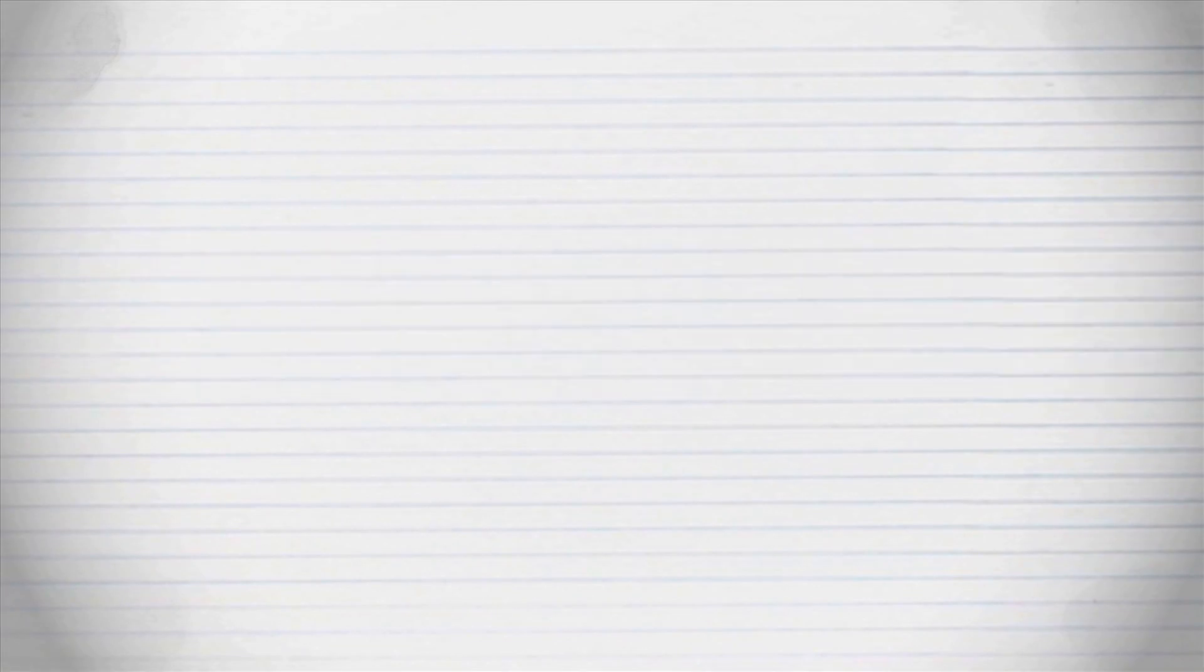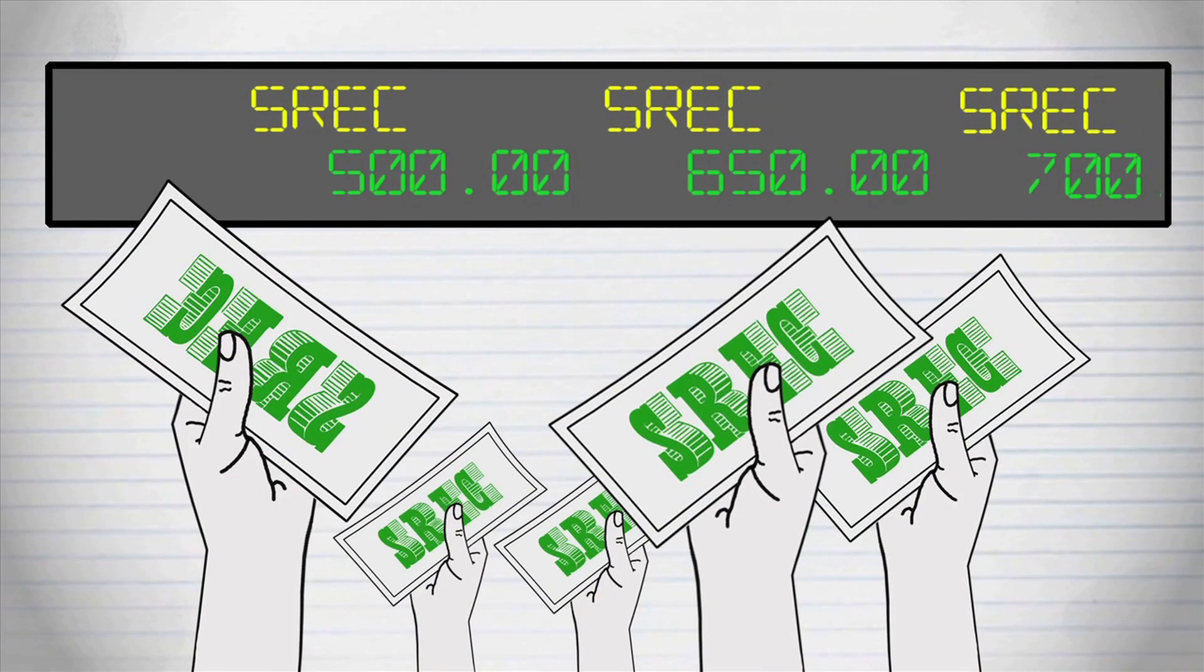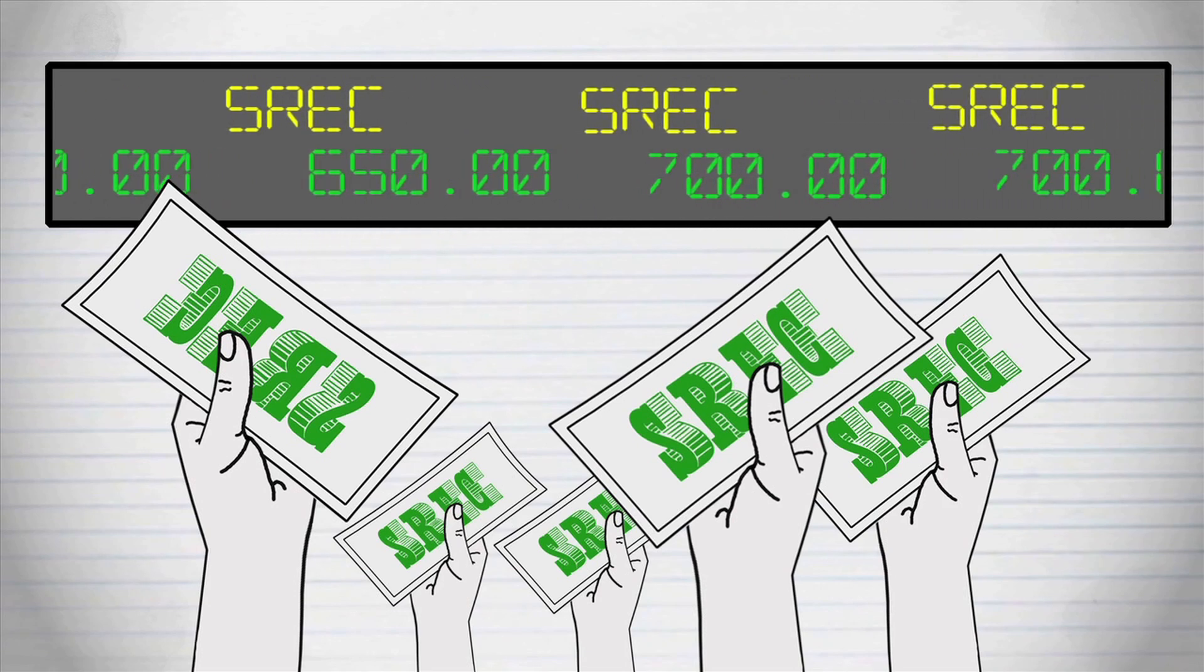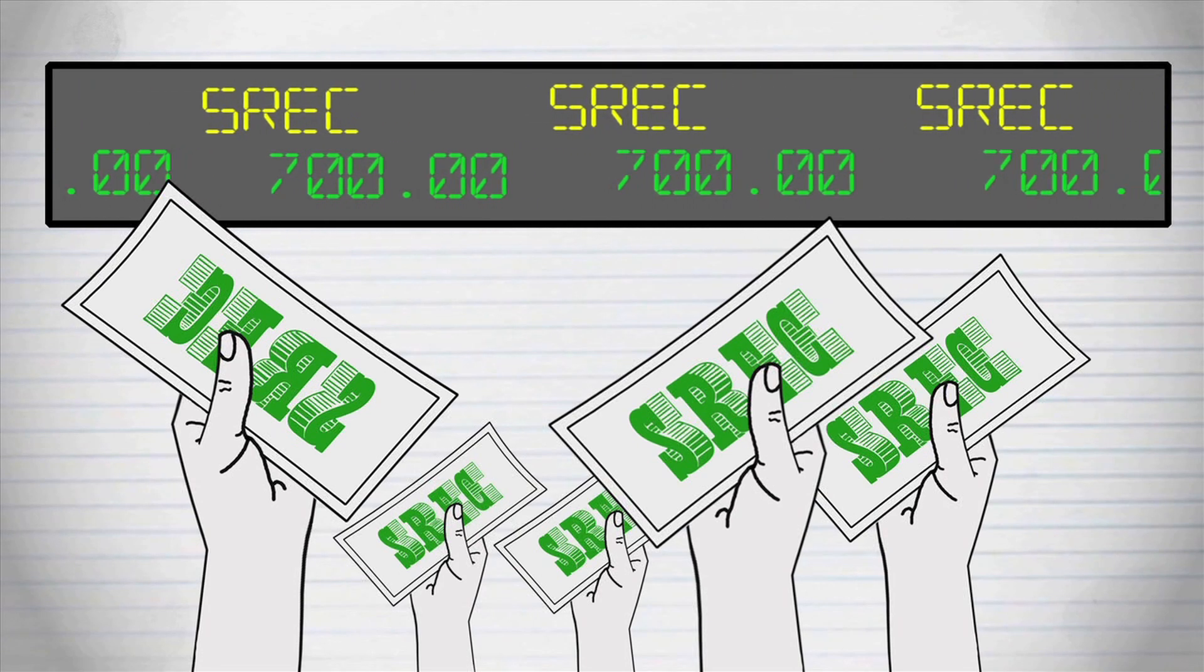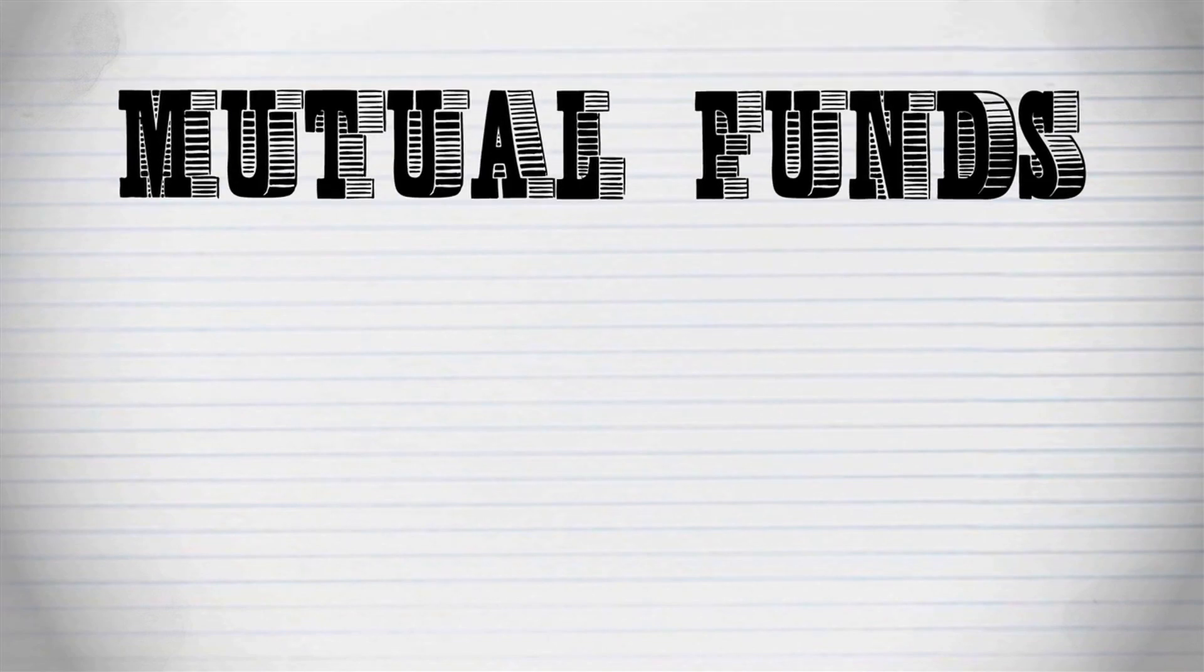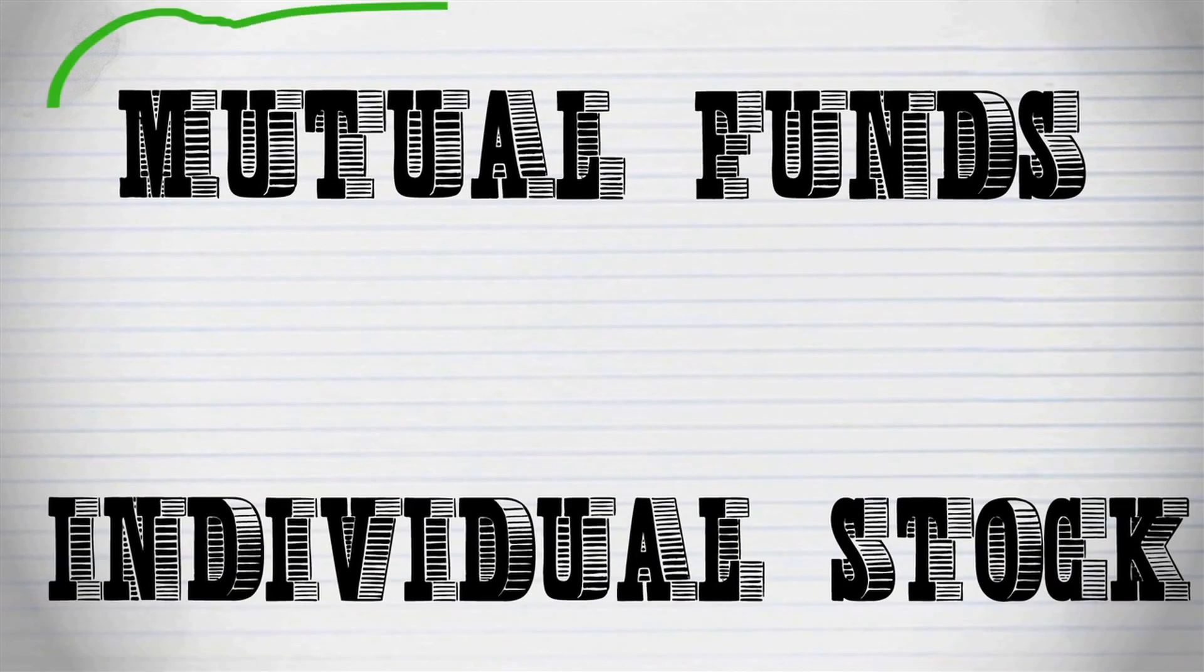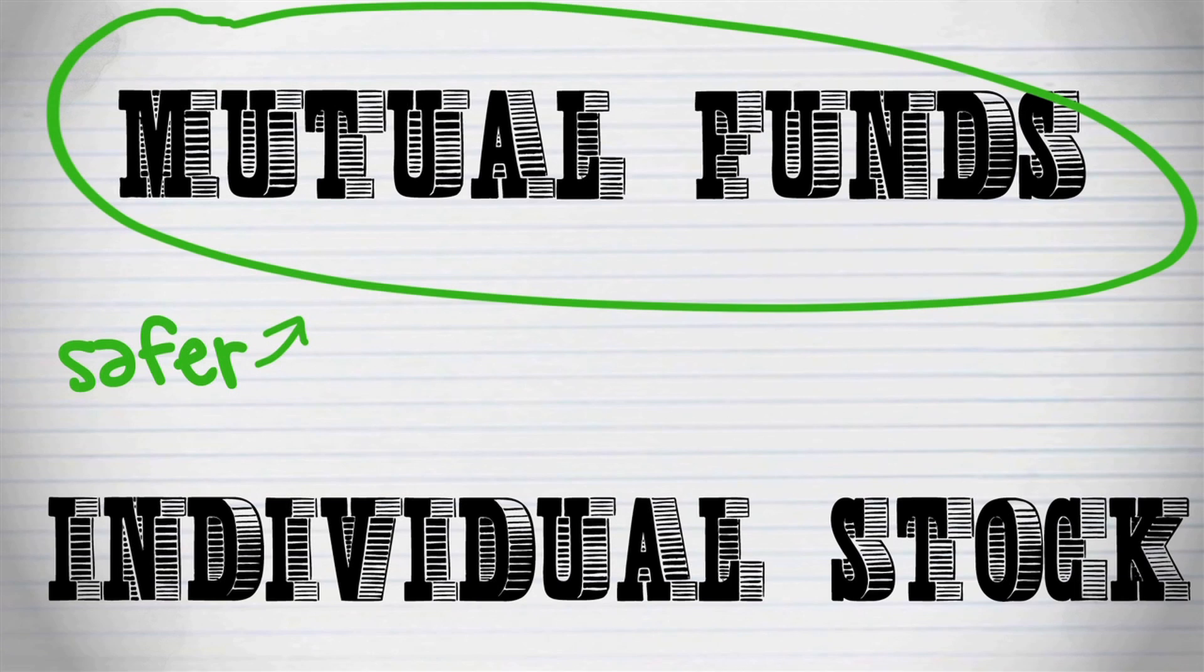Usually, if this is an option, your solar installer will already have a relationship with one of these companies and can hook you up. The second option is to register your SREX and trade them on the open market. Right now, this is available in very limited places and requires being a particularly savvy consumer. Think of these two options like the difference between trading mutual funds and individual stocks, one safer and easier, with a more consistent but limited benefit.